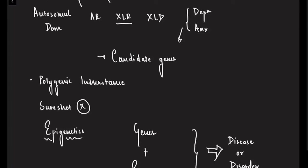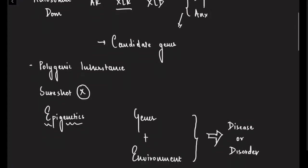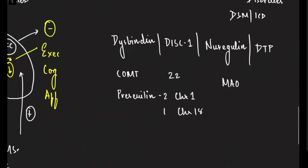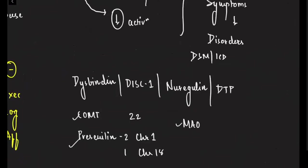Regarding genetics, for the exam they do expect you to know the chromosome numbers for disorders. For the basic ones — COMT, MAO, presenilin 1, presenilin 2, DISC1, neuregulin, and DISC binding — they may ask the chromosome numbers. They won't really ask chromosome numbers for very rare or still-researched genes beyond this list.